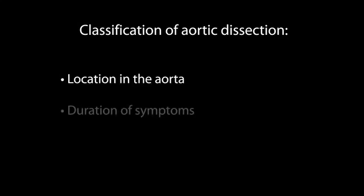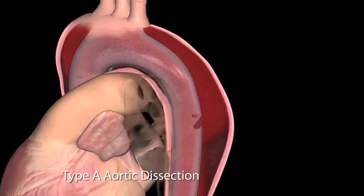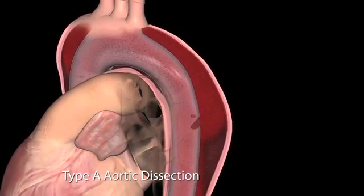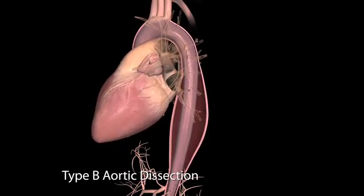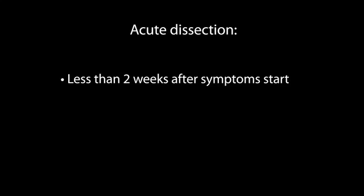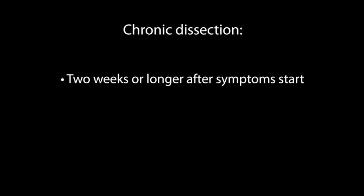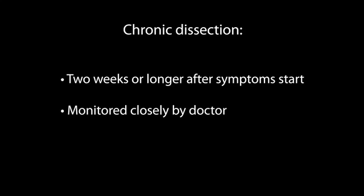An aortic dissection may be classified according to its location and duration of symptoms. In the Stanford system, if you have an aortic dissection in your ascending aorta, it is called a type A dissection. All other dissections are called type B. If your symptoms have lasted less than two weeks, you have an acute dissection, which can be rapidly fatal and requires immediate medical attention. If your symptoms have persisted for two weeks or longer, you have a chronic dissection, and your doctor will monitor it closely for changes.